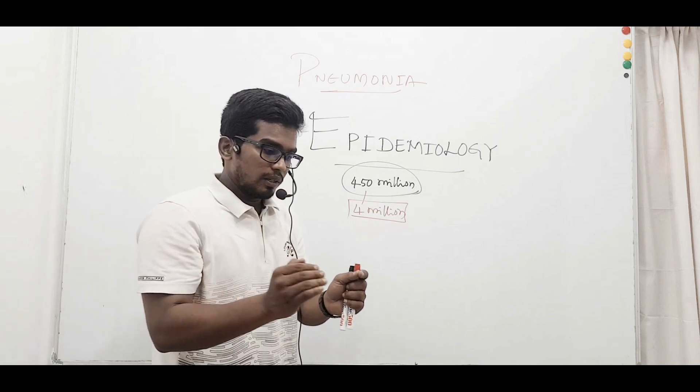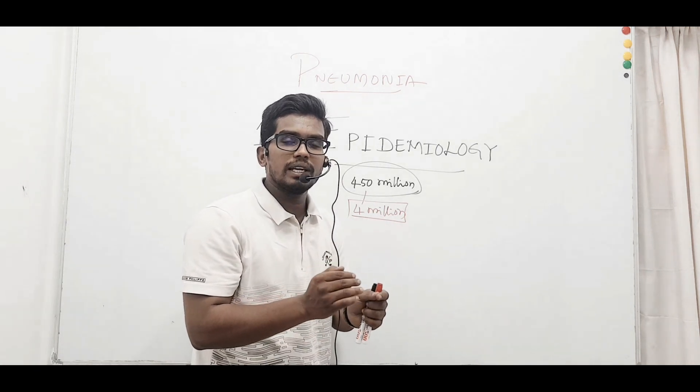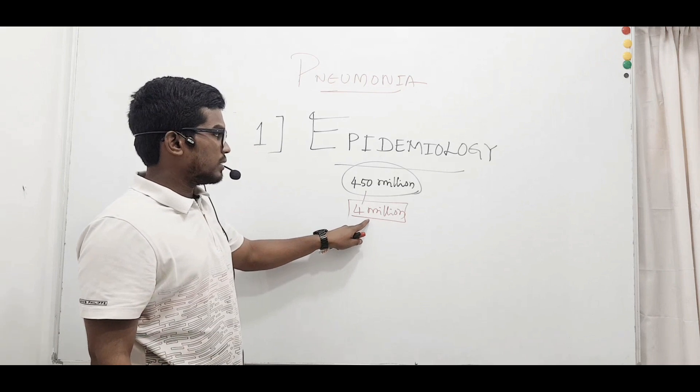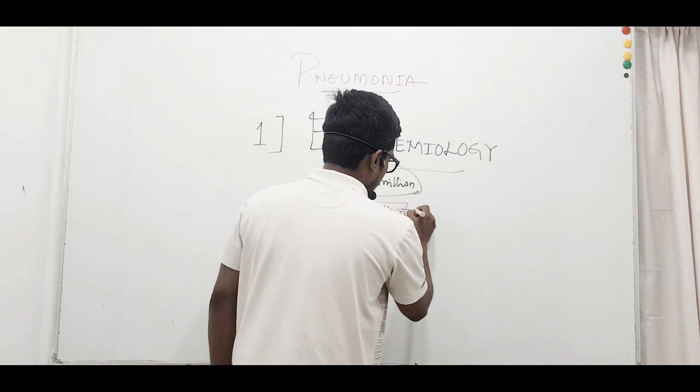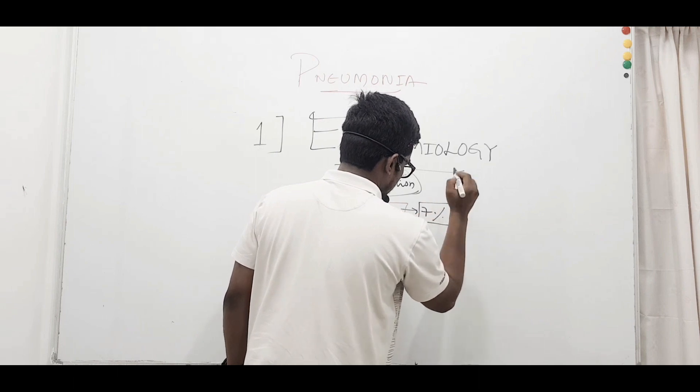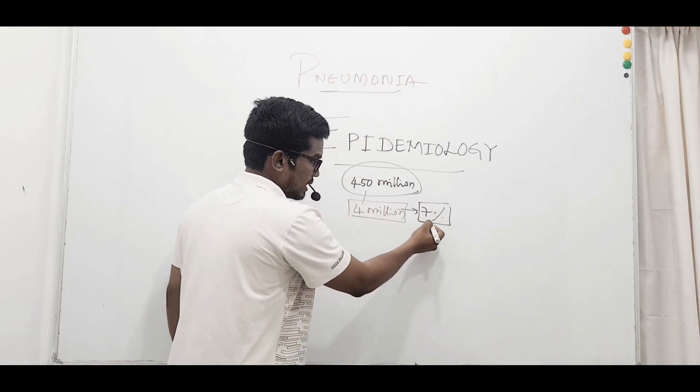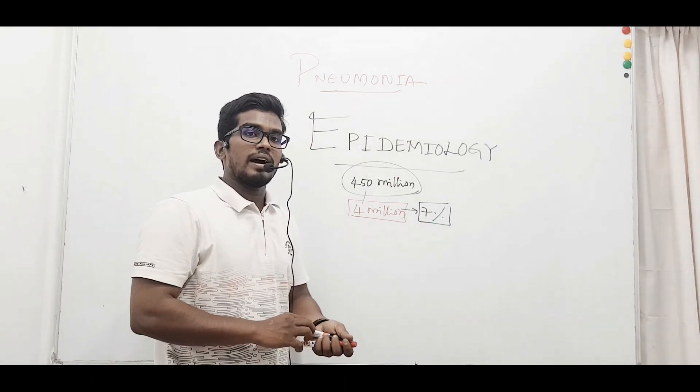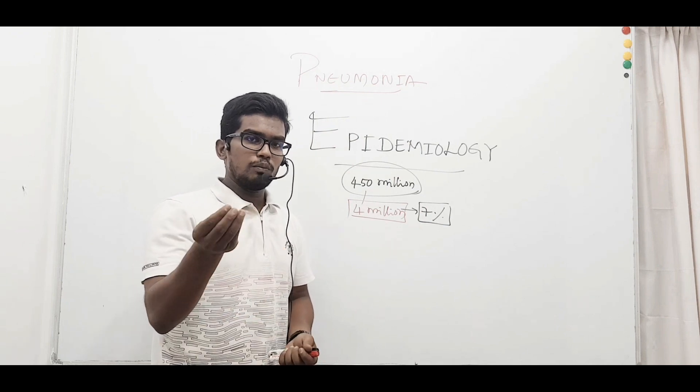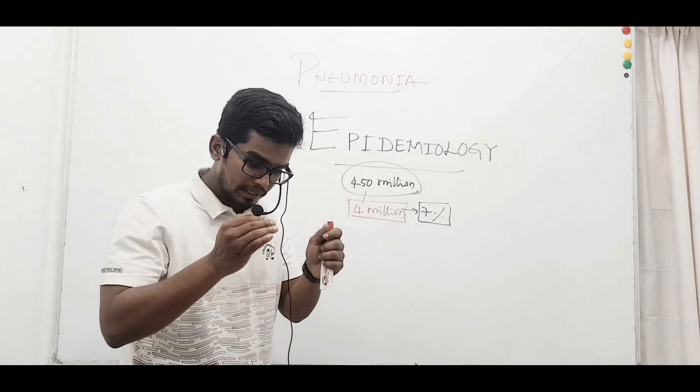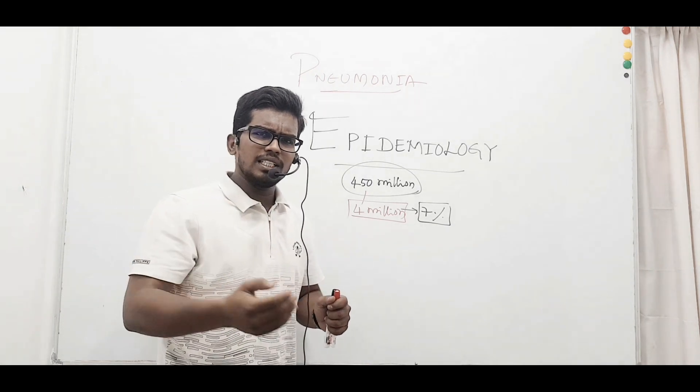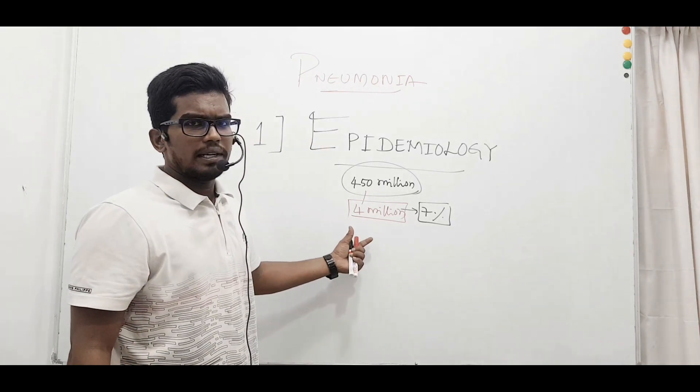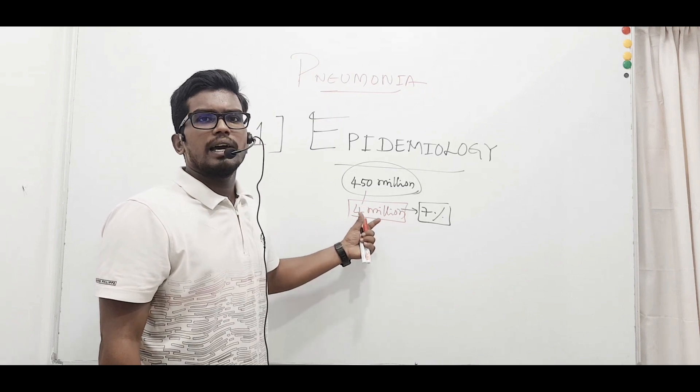This disease is more found in developing nations than developed ones. When you take into consideration the death rate, 7% of total deaths in a year occur because of pneumonia, which is a very high percentage. Before the discovery of antibiotics in 1930, pneumonia was causing more deaths. Since now it has become treatable, yet it remains a public health concern.